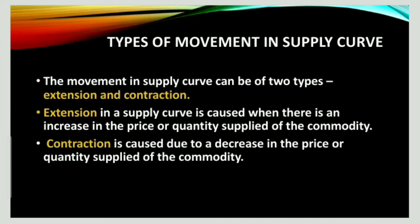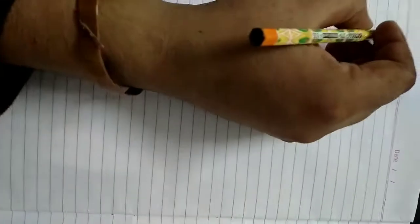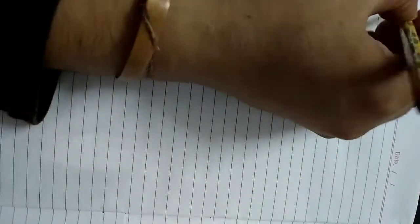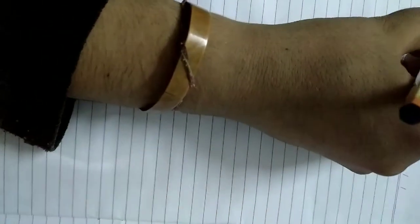The first type is extension — an increase in price leads to an increase in quantity supplied. The second type is contraction — the supplied quantity decreases with a decrease in price. So today we are going to learn the supply curve.